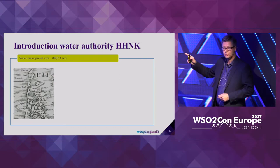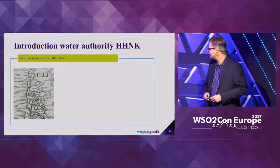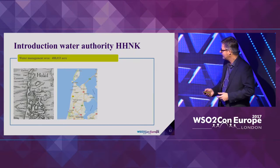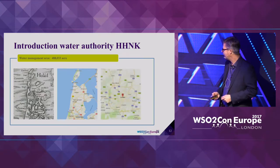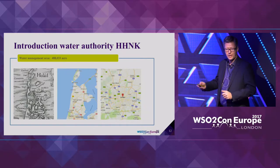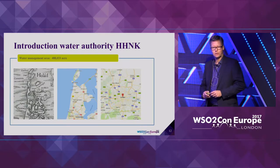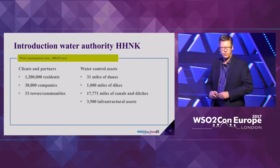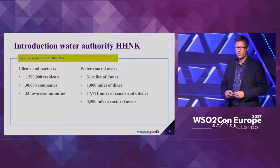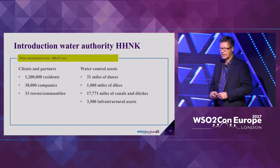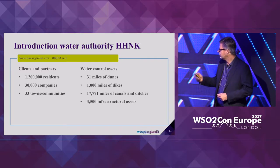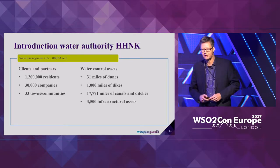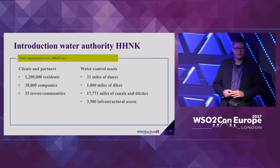When we look at our region, this picture shows what it looked like from the Middle Ages, and this is our region now. By managing water and poldering, we gain more land — that's what we have to manage. To compare the size, we have a picture of the London area, so you can see how big it is approximately — about 500,000 acres of land. Our clients and partners consist of 1.2 million citizens and 30,000 companies who pay taxes, and we work together with about 30 communities. Our water control assets comprise more than 1,000 miles of embankments and 18,000 miles of canals and ditches.